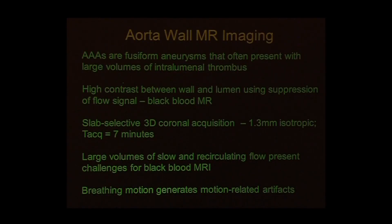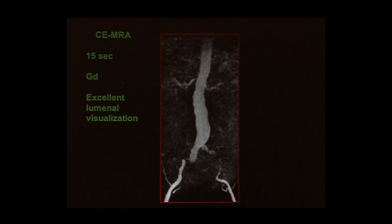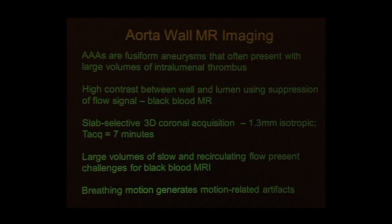In the remaining time, I'll discuss investigations into abdominal aortic aneurysms. Fusiform aneurysms often present with large volumes of intraluminal thrombus, and we need a technique providing high contrast between wall and lumen. We use black blood MR to suppress blood signal, targeting 1.3 millimeter isotropic resolution — 1.3 mm in X, Y, and Z. A drawback of MR is that acquiring this data requires approximately seven minutes, which is far too long for a breath hold.